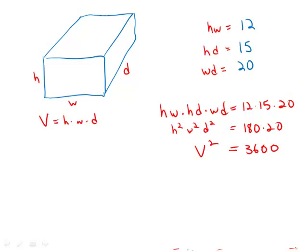If you multiply the surface area of the three different faces, what you get is the volume squared. That's an amazing trick to know.